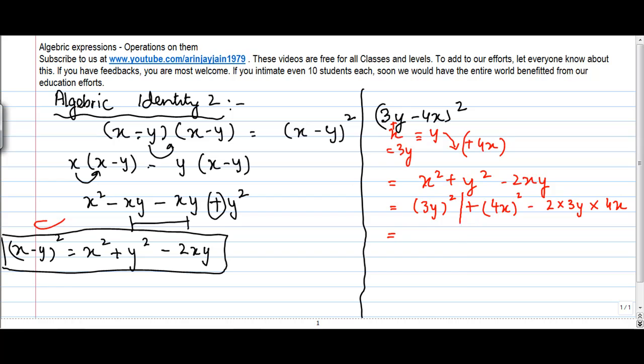Let's simplify each one of them. 3y into 3y, 3 into 3 gives me 9, y into y will give me y squared, plus 4x into 4x, 4 into 4 is 16, x into x gives me x squared, minus 2 into 3 is 6, 6 into 4 is 24, and x into y is xy, minus 24xy.